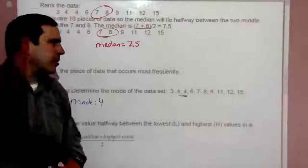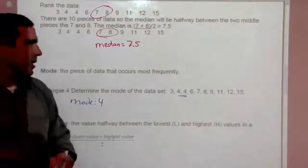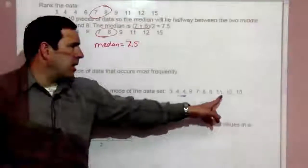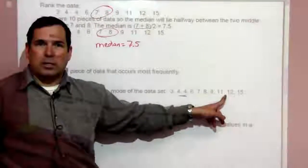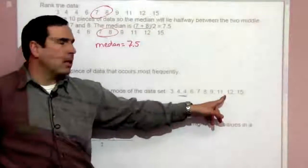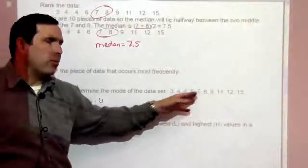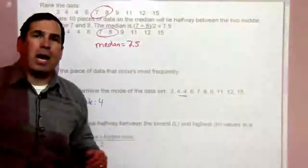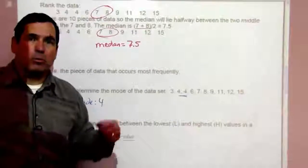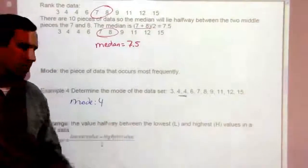Let's say that something else occurred twice, like 11 occurred twice. Then we'd have two modes — that would be called bimodal, meaning two modes.